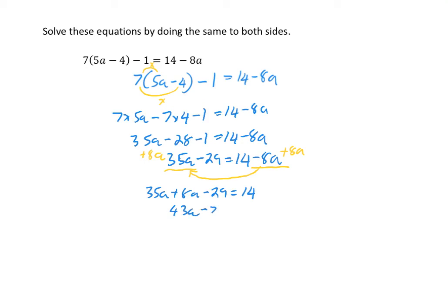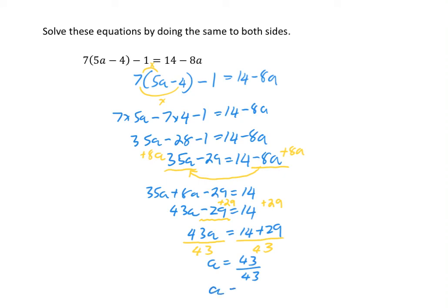So 43a minus 29 is equal to 14. Now I apply my inverse operations to get a by itself. The first operation to get rid of is minus 29 — the opposite is plus 29 — so I add 29 to both sides: 43a is equal to 14 plus 29, which is 43. The last operation is to get rid of multiplying a by 43, so I divide both sides by 43, giving a is equal to 43 divided by 43, which is 1.